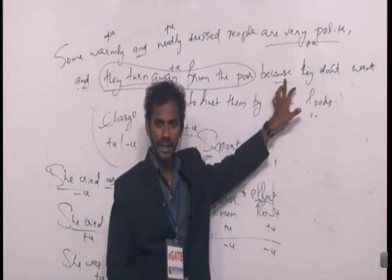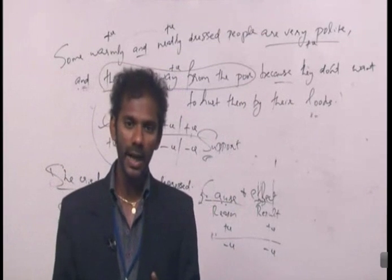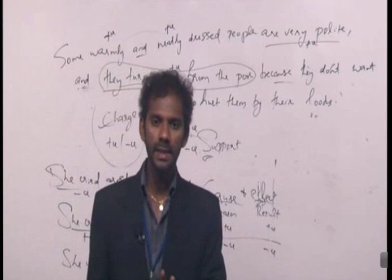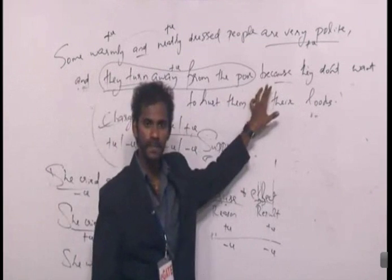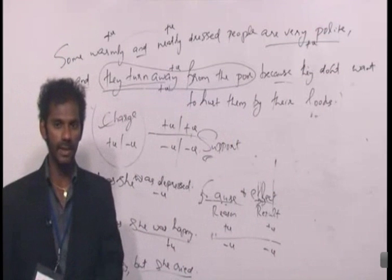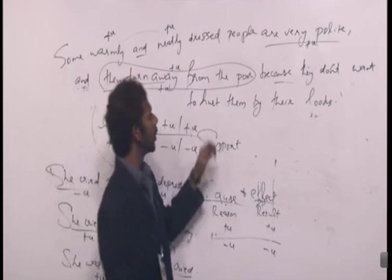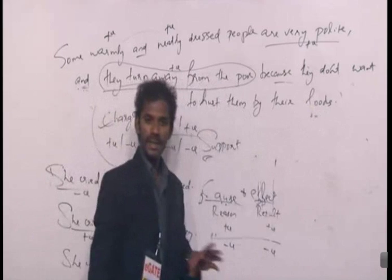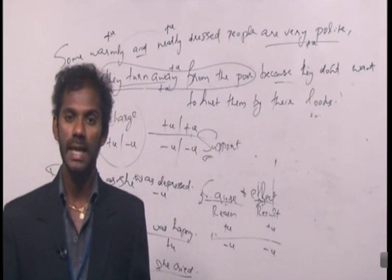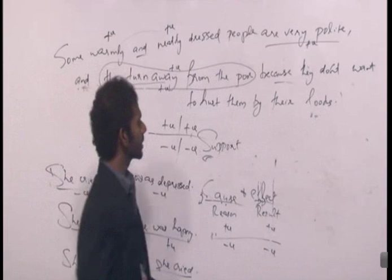Then 'because' is a cosmic indicator. The two ideas it connects are 'they turn away from the poor' and 'they don't want to hurt them by their looks.' Which idea is the reason? 'They don't want to hurt them by their looks.' Is this a negative or positive reason? It is a positive reason — because of the concept of double negation. 'Don't' is negative and 'hurt' is negative. Two negative terms coming together means double negation, so the meaning becomes positive.